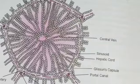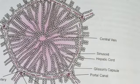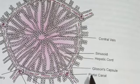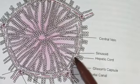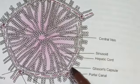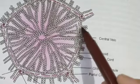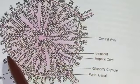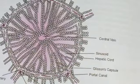It is mentioned in NCERT that each lobule is covered by a thin connective tissue sheath called the Glisson's capsule. This Glisson's capsule sheath covers every hepatic lobule.